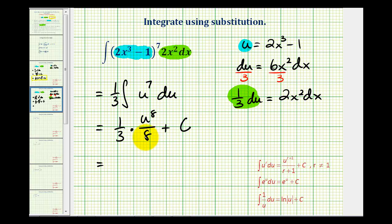And now we need to rewrite this in terms of x. So we'd have 1 24th times the quantity 2x cubed minus 1 raised to the 8th power plus c. So this would be our anti-derivative in terms of x using integration by substitution.